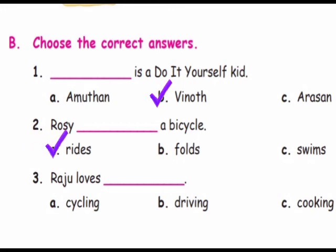Third one: Raju loves — A. Cycling. B. Driving. C. Cooking. Answer: C. Cooking.